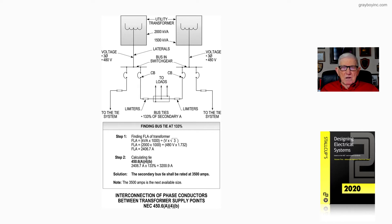It's 133% is what we are told as a requirement in our section 450.6(A)(4)(b). Now, reviewing the boxed-in information, finding bus TIE at 133%. Step one's the same.